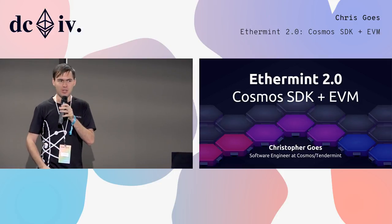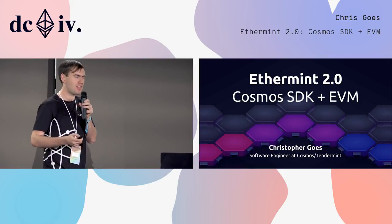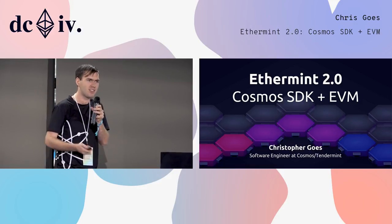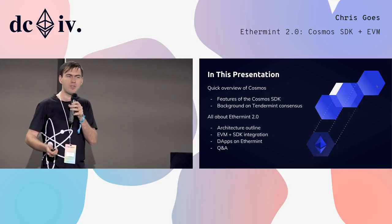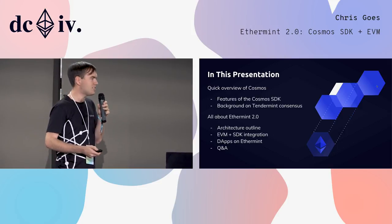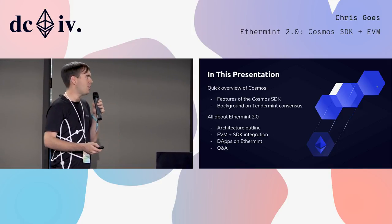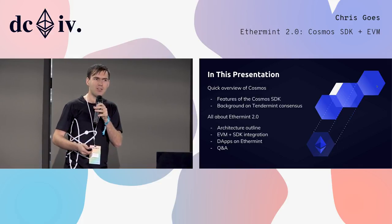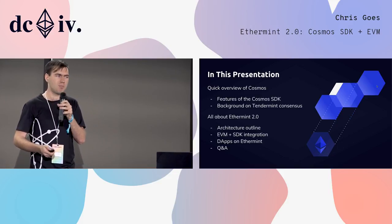I'm going to talk about Ethermint 2.0, which combines the best features of Ethereum, the EVM, and the best features of the Cosmos SDK and Tendermint. In this presentation, first I'll give a quick overview of Cosmos, explain the network model, the topology, why we think it makes sense. I'll talk about the feature set of the Cosmos SDK in particular and how it can be combined with the EVM, and I'll give a quick background on Tendermint consensus and how it facilitates this model of interconnected blockchains.